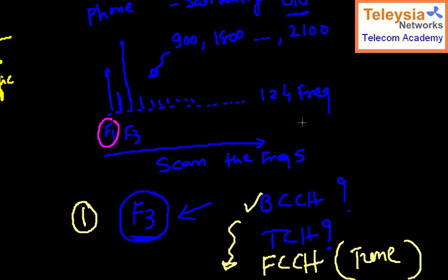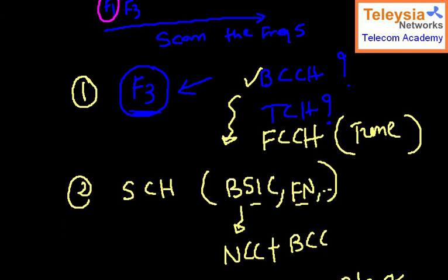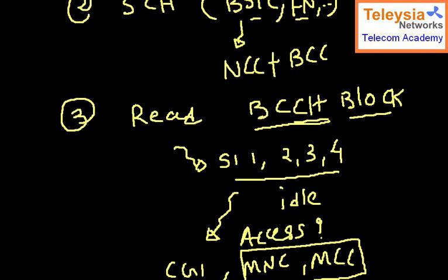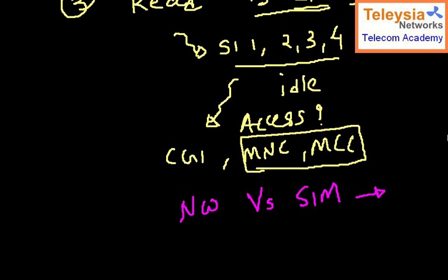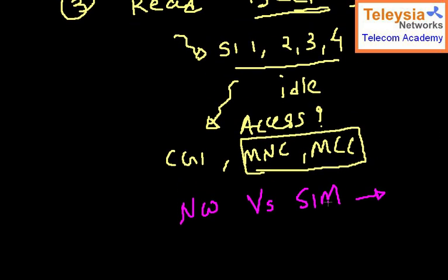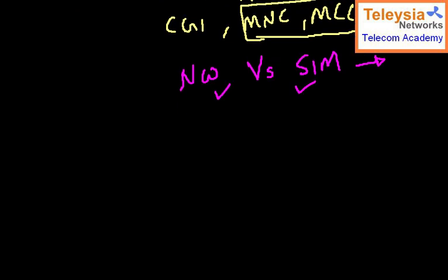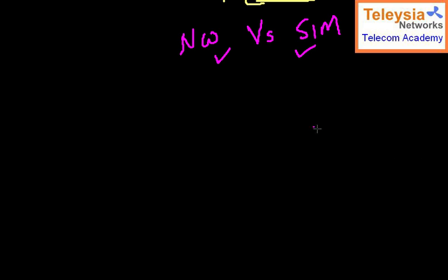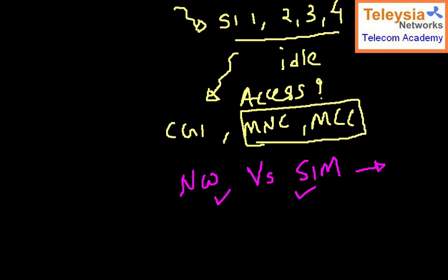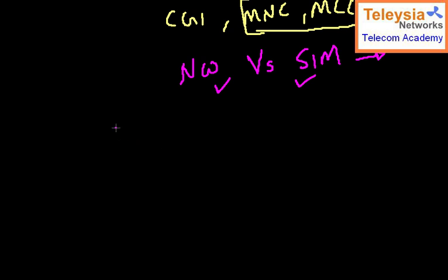For simplicity, let's say both PLMN values match, so this is our BCCH frequency and it belongs to our network. The fourth step is registration, which we call Location Update.